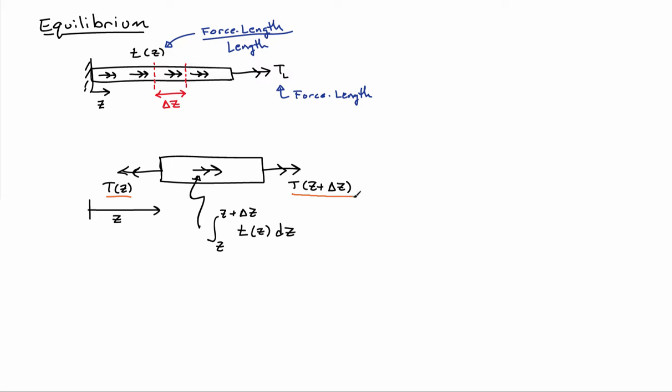On the right face, there'll be an internal torque T of z plus delta z. And then there's also the distributed torque, little t. So the total torque associated with the distributed torque is going to be the integral of little t of z from z to z plus delta z. So that's my complete free-body diagram. You can see that there's no forces acting on the system directly, no resultant forces, and there's only torques about the z-axis.